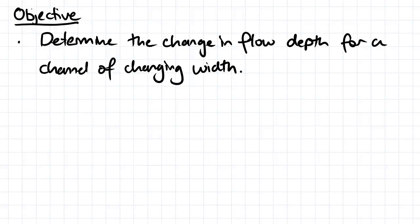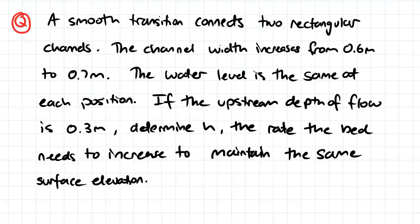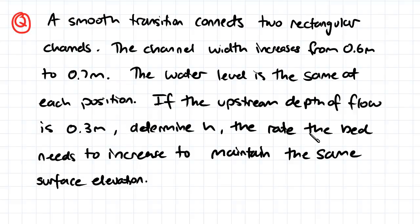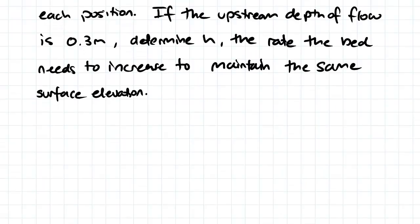The objective for this video is to determine the change in flow depth for a channel of changing width. A smooth transition connects two rectangular channels; the channel width increases from 0.6 meters to 0.7 meters. The water level is the same at each position, and the upstream depth of flow is 0.3 meters. We need to determine h, the rate the bed needs to increase to maintain the same surface elevation.